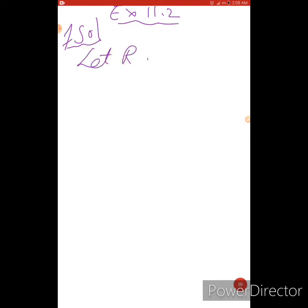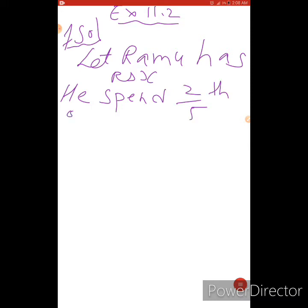Let Ramu has rupees X. We don't know, that's why X. And how much he spent? He spent 2 by 5th of his money. 2 by 5th of his money, we can write it this as 2 by 5 X. Clear?